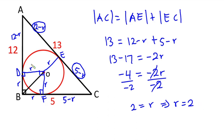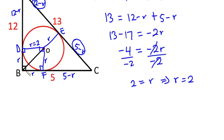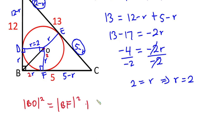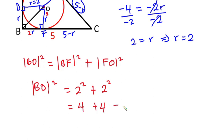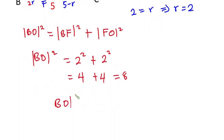So the radius of the circle is 2, meaning R equals 2. Now that we know R is 2, it means the length of BF is also 2 units. Now we want BO, so we apply the Pythagorean theorem. BO squared equals BF squared plus FO squared. BF is 2 and FO is also 2, so BO squared equals 2 squared plus 2 squared, which is 4 plus 4, equal to 8.